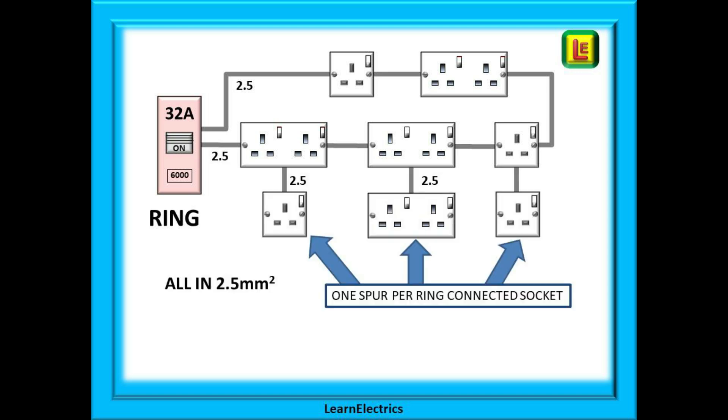If we wish to add sockets to the existing sockets on the ring then we are limited to one socket per existing ring connected socket. This extra socket can be a single or double, the only restriction is that it must be one moulding and all cabling to the newly added sockets must also be in 2.5 mm cable.